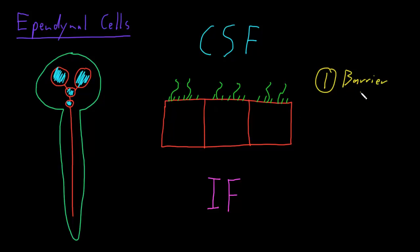Now as barriers go, the ependymal cells form a fairly leaky barrier, particularly if we were to compare it to the blood-brain barrier created by the capillaries in the central nervous system and the astrocyte end feet.